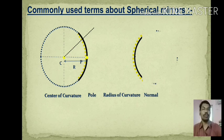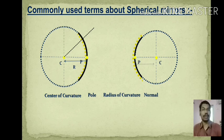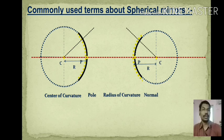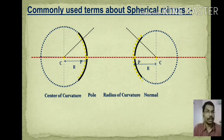For a concave mirror, it is also a part of a circle which has a center called the center of curvature. The geometrical center of the mirror is called the pole P, and the distance between C and P is called the radius of curvature. By drawing a line from the center to any given point on the mirror surface, that line becomes the normal at that point.